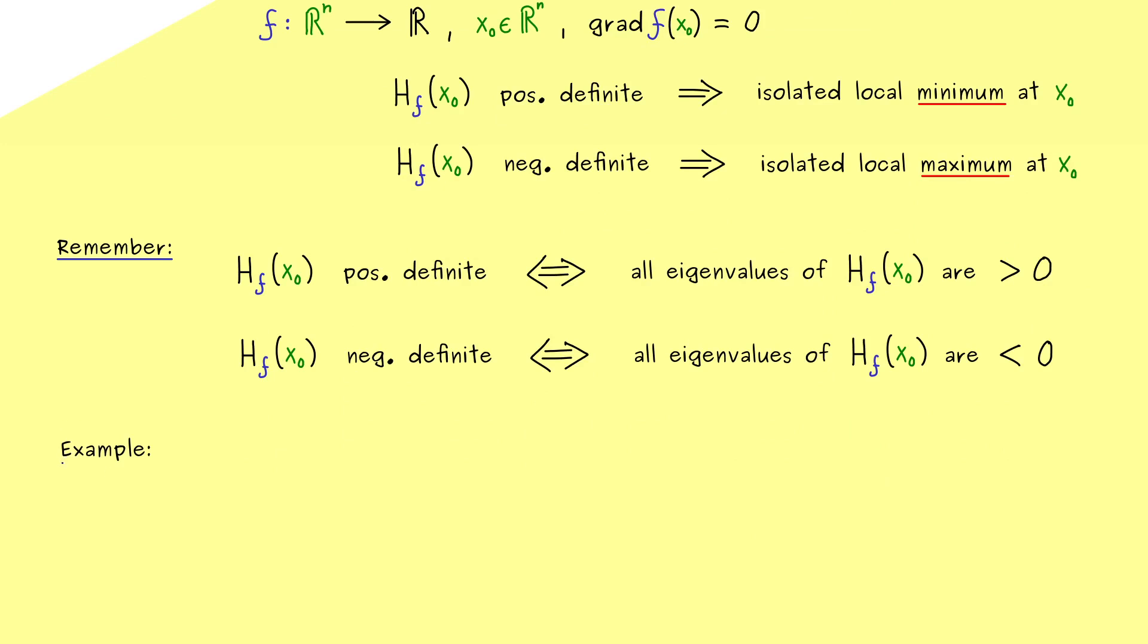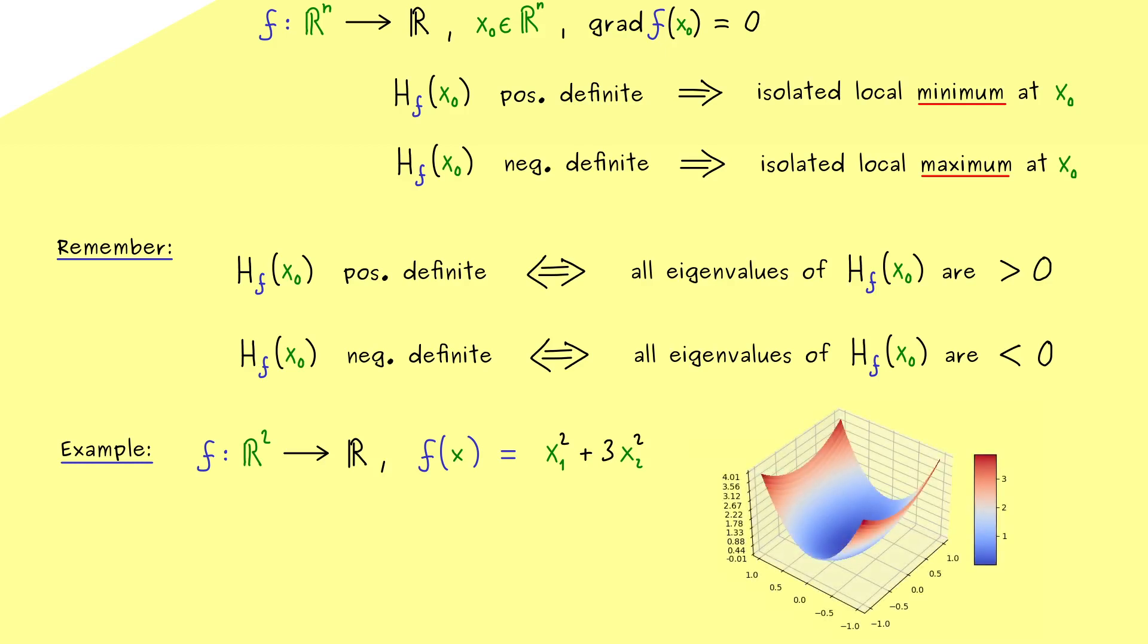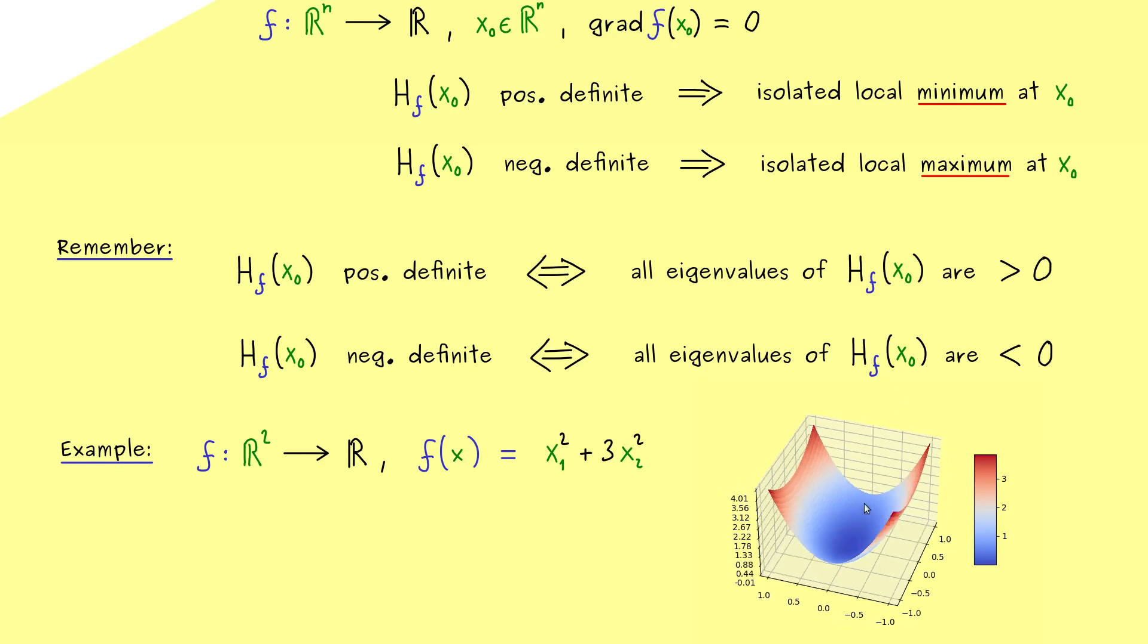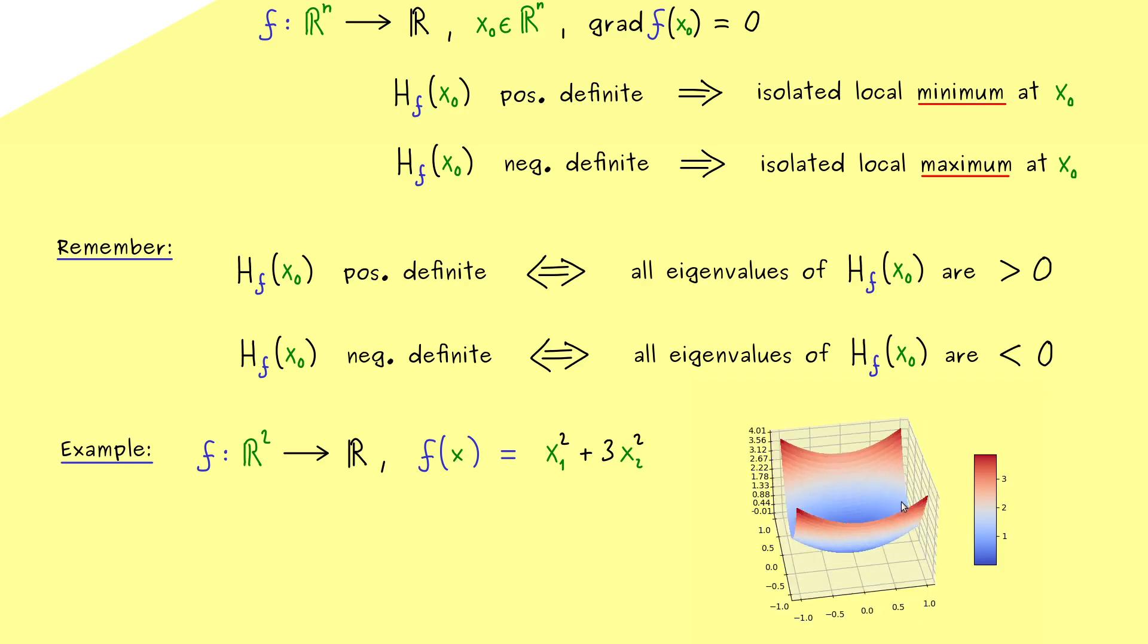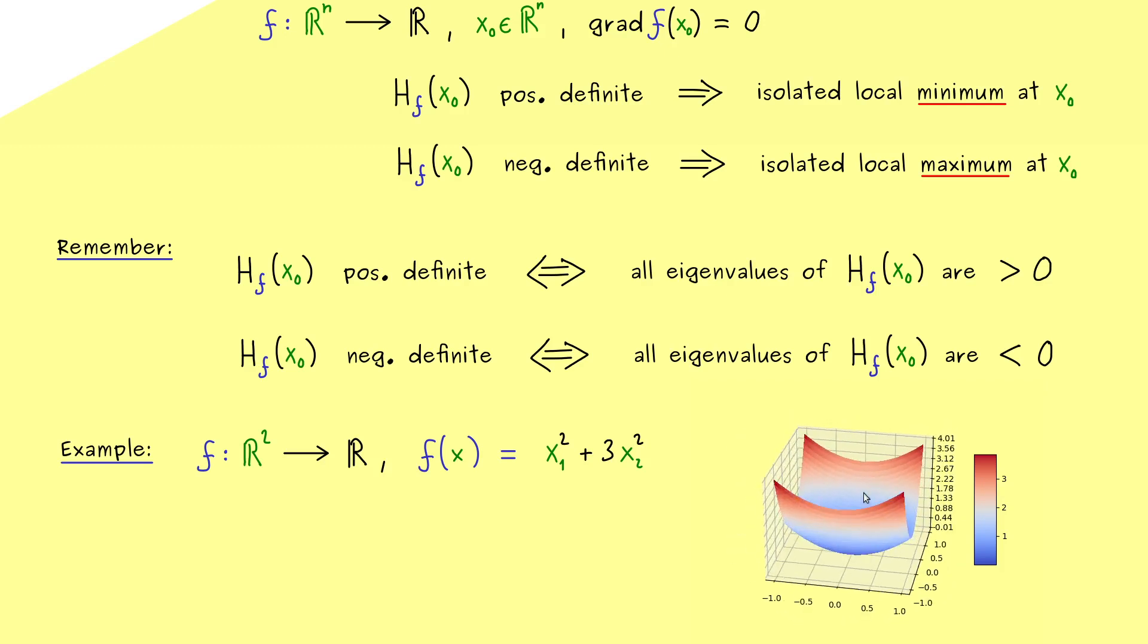In other words knowing the eigenvalues of the Hessian helps us to apply these implications. And that's what we will now do in an example. As always I want to keep it simple so we choose a two-dimensional one. So it should be a function f defined on R² which means it gets two inputs. We put that into a vector x with two components x₁ and x₂. And then I want to have x₁² + 3x₂².